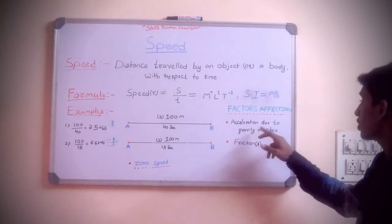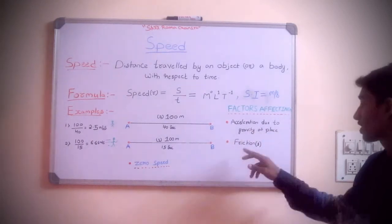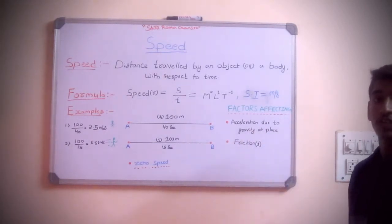Factors affecting speed: acceleration due to gravity at a place and friction. These are the two factors which affect the speed.